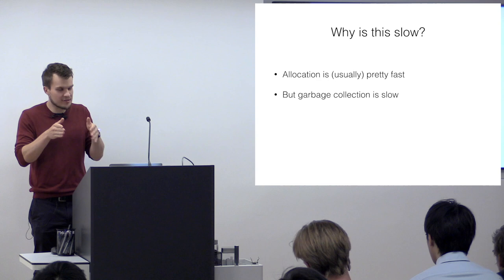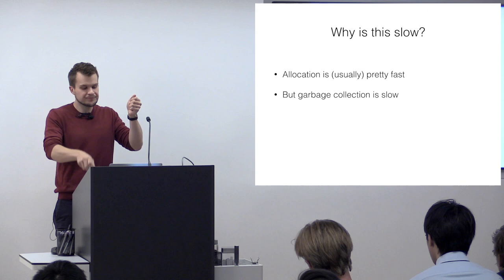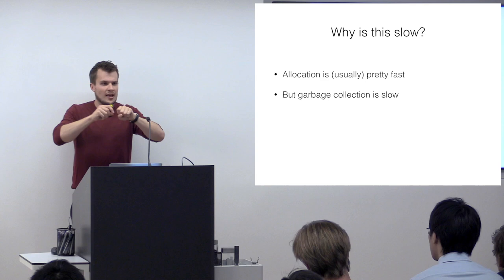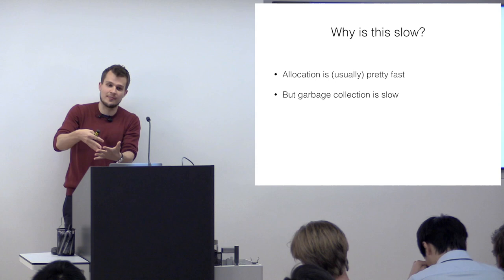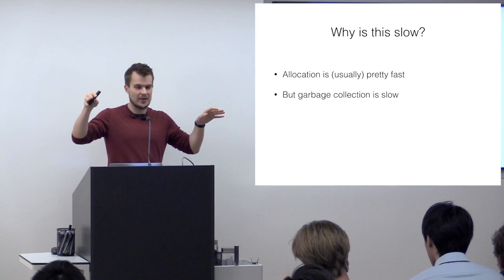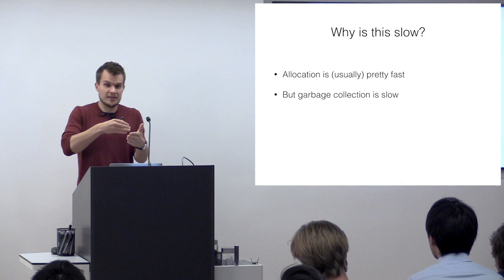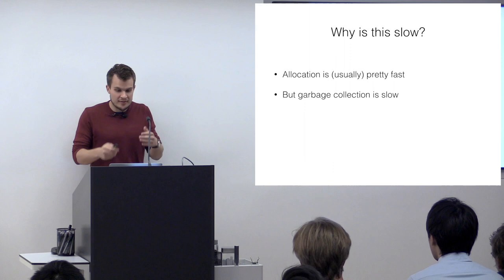If you assume garbage collection is the only problematic thing for performance, you'd think your average or median is unchanged, but every once in a while GC kicks in and causes the tails to look bad — on average you process messages fine, but every so often you hit a GC halfway through processing and the performance of that message is really terrible. So the tails of your performance distribution look bad. But it turns out this is true and yet not the only factor — the median itself is also affected by garbagey programming.